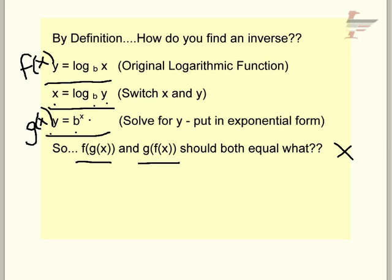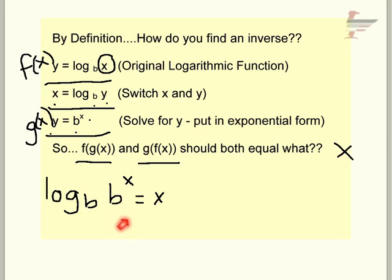If I do f of g of x, I'm going to take log base b, replace x with g of x, and that's b to the x. I know that should equal x. Basically, what that is saying is if you take the log base b of some exponential function with base b, they essentially cancel each other out. Log base 2 of 2 is really just 1. Hence, whatever that exponent is, is what you're going to be left with.